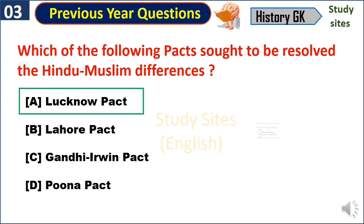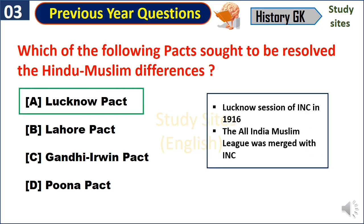Lucknow Pact. This pact was signed in the Lucknow session of the Indian National Congress in 1916, and in this session the All India Muslim League was merged with the Indian National Congress.